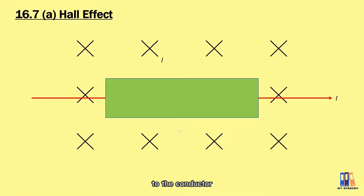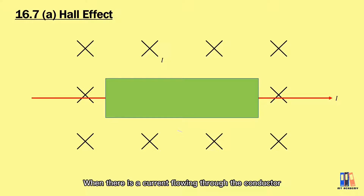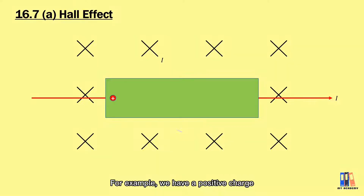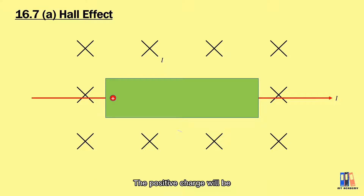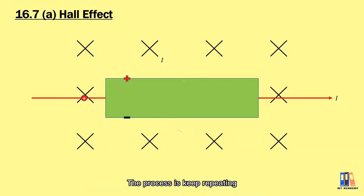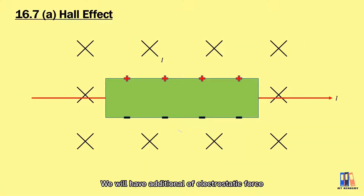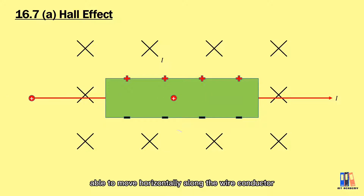Before this, we learned what happens to a conductor when it is placed in a magnetic field. Now we're going to look into the interior of the conductor. When there is a current flowing through the conductor, there will be charge carriers moving in it. For example, we have positive charges moving to the right. By using the Fleming left-hand rule, the magnetic force on the moving charge is in the outward direction, so positive charges are deflected to the top surface, making it positively charged and the lower surface negatively charged. This process repeats until an electric field is set up perpendicular to the direction of current flow, producing an electrostatic force that cancels the magnetic force. In the end, the moving charges are able to move horizontally along the conductor.